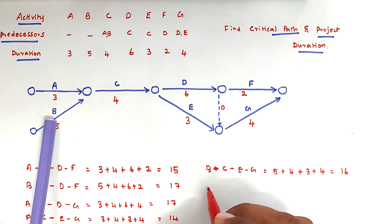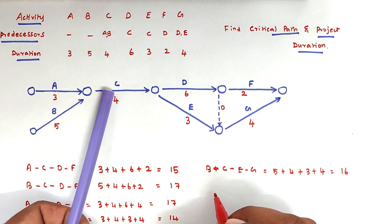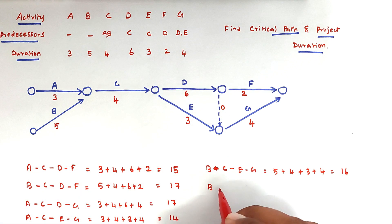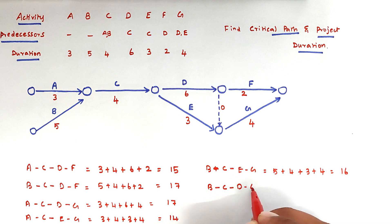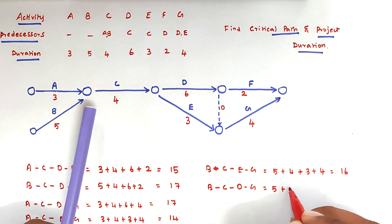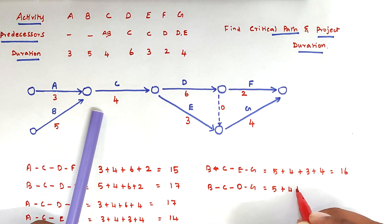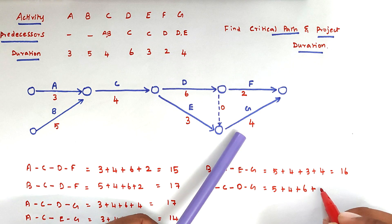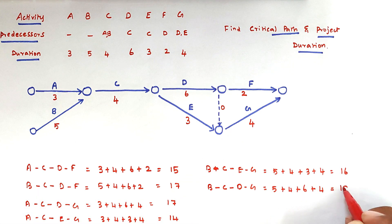The next path is B, C, D, G with a duration of 5 plus 4 plus 6 plus 4, which equals 19.